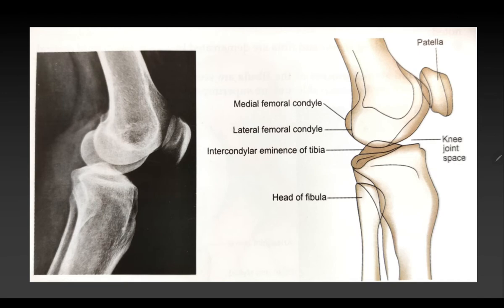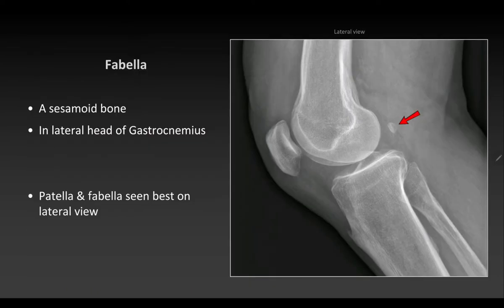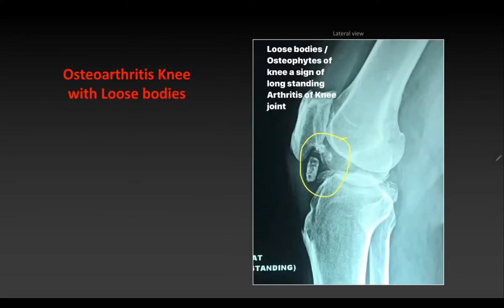On the lateral view you can see the patella, medial femoral condyle, lateral femoral condyle, tibia, tibial tuberosity, and head of fibula. Two sesamoid bones may be present: the patella and sometimes the fabella in the lateral head of gastrocnemius, present posteriorly. It is important to differentiate the fabella from loose bodies — if you see a bone lying in that region, it could be the fabella rather than a loose body.